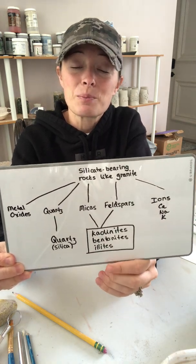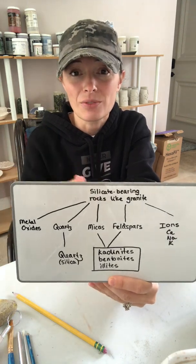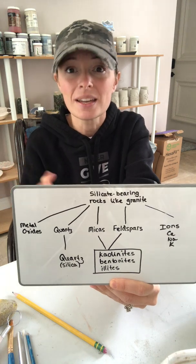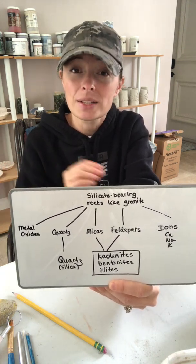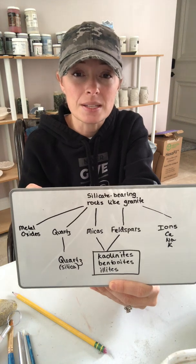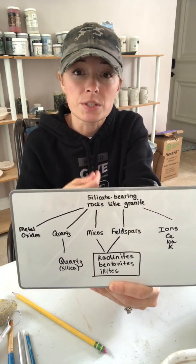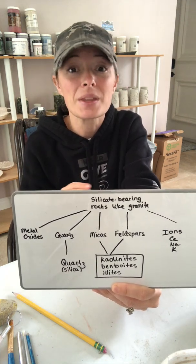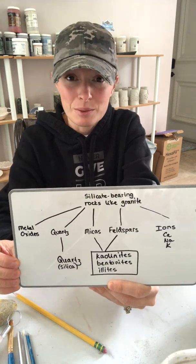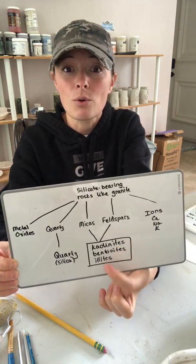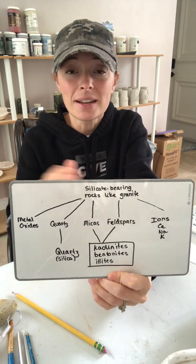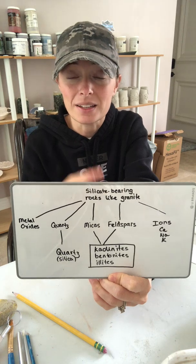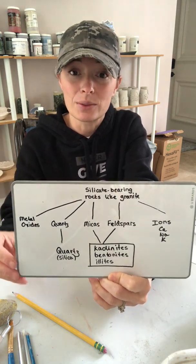Ball clay is a naturally found clay — it is not a single substance. There are many different types of ball clay, and depending on which one you use you can get very different results: different flow, different vitrification, very different properties. Because it's not a single material, it is a mix of things — kaolinites, bentonites, illites, and a whole bunch of other minerals that did not get broken down completely.